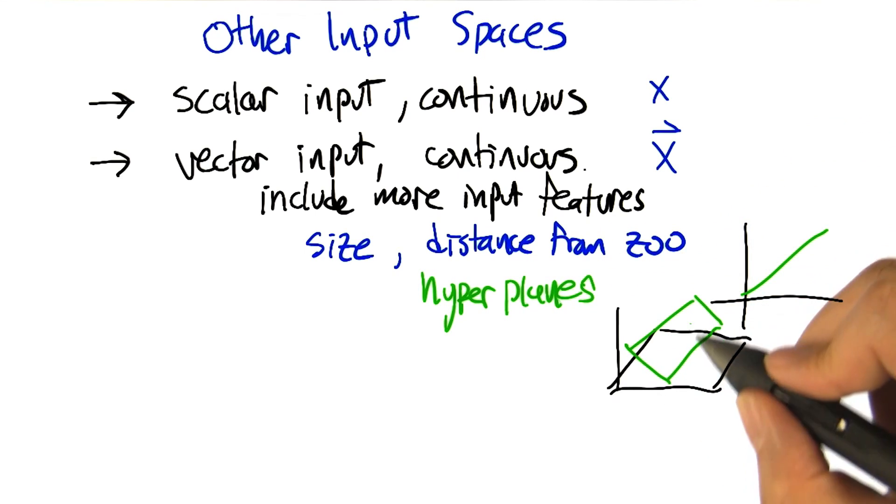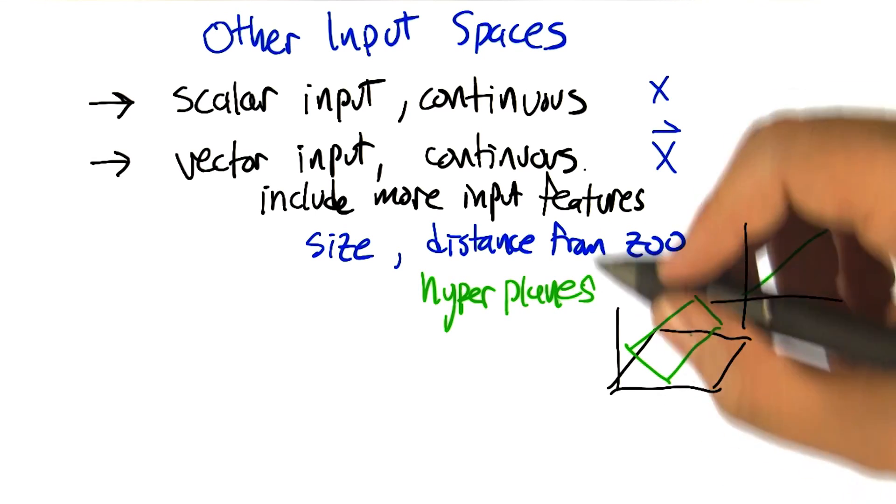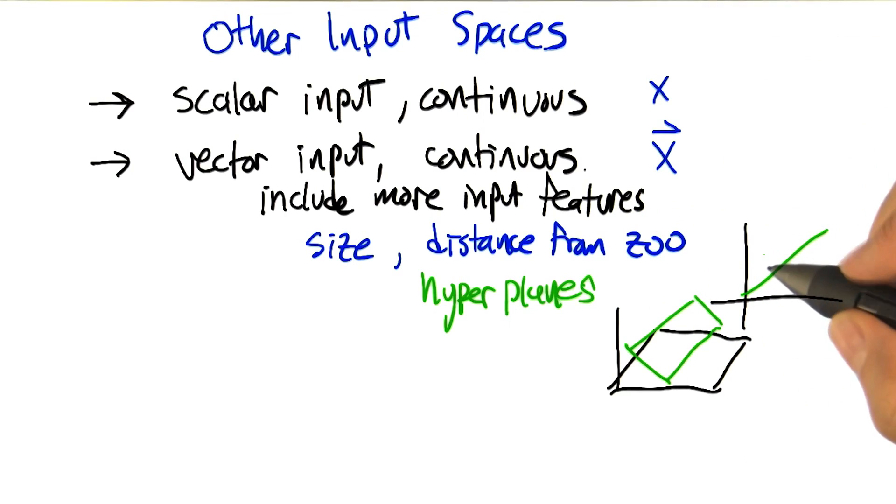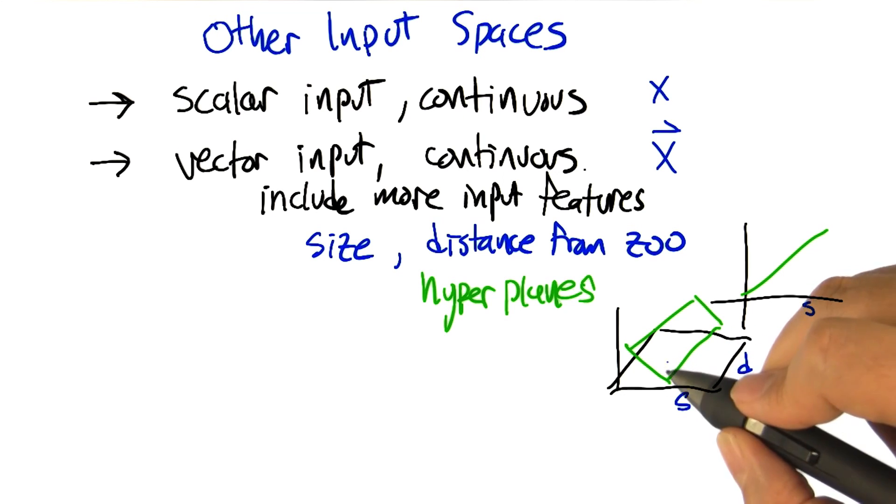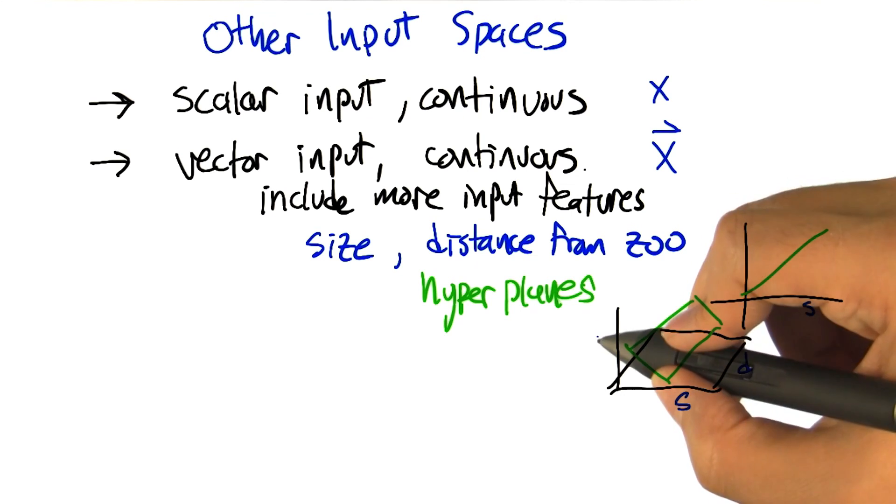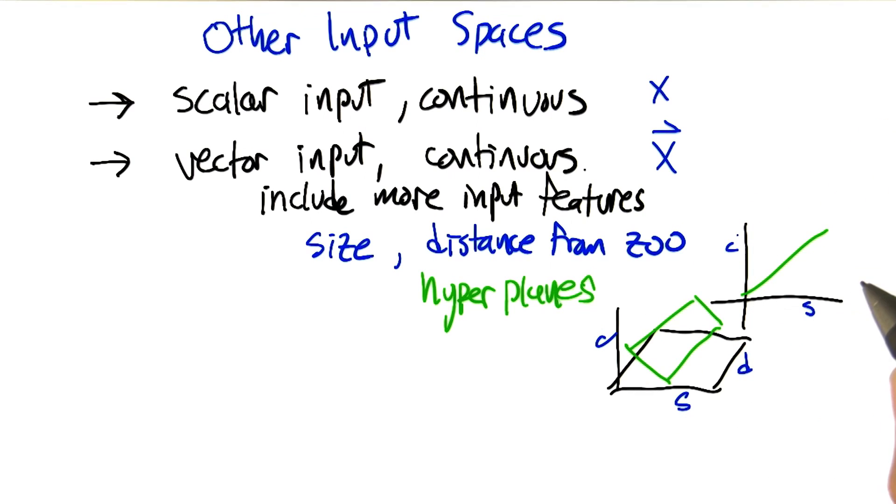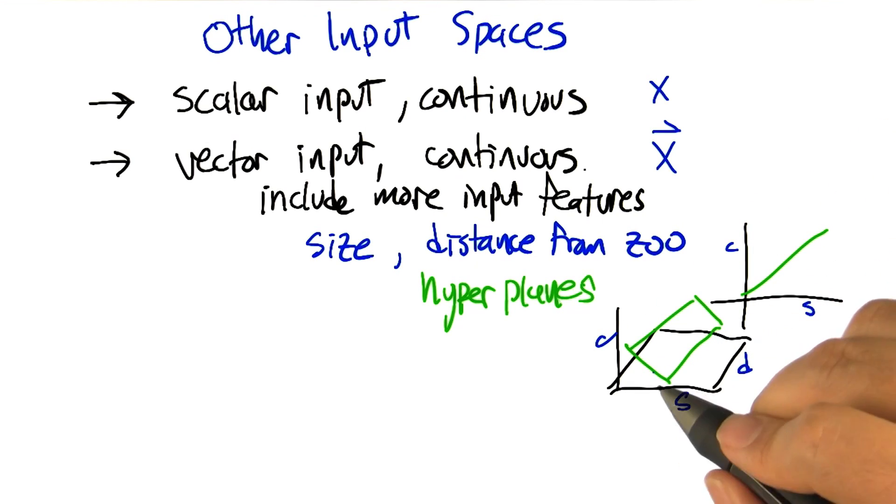Well, if we think about lines, we could just generalize to planes and hyperplanes. Right, so in the case of a one dimensional input, that one dimensional input gets mapped to the cost. But in the case of two dimensional inputs, like size and distance to the zoo, we have something that's more like a plane, combining these two things together in a linear fashion to actually predict what the cost is going to be. This notion of linear functions generalizes. This notion of polynomial functions generalizes too very, very nicely.